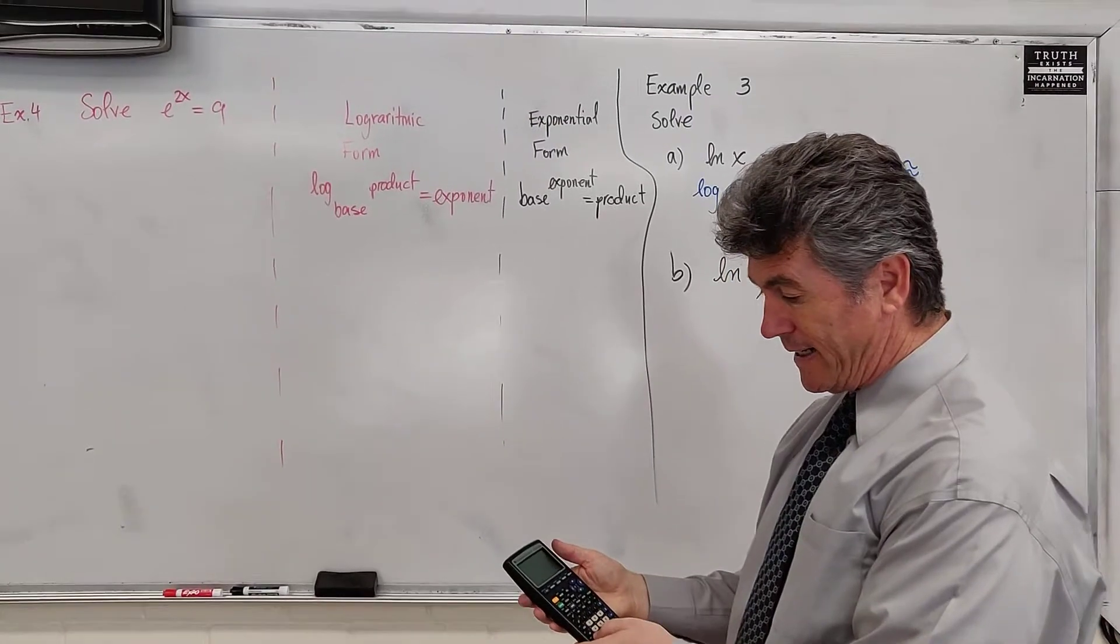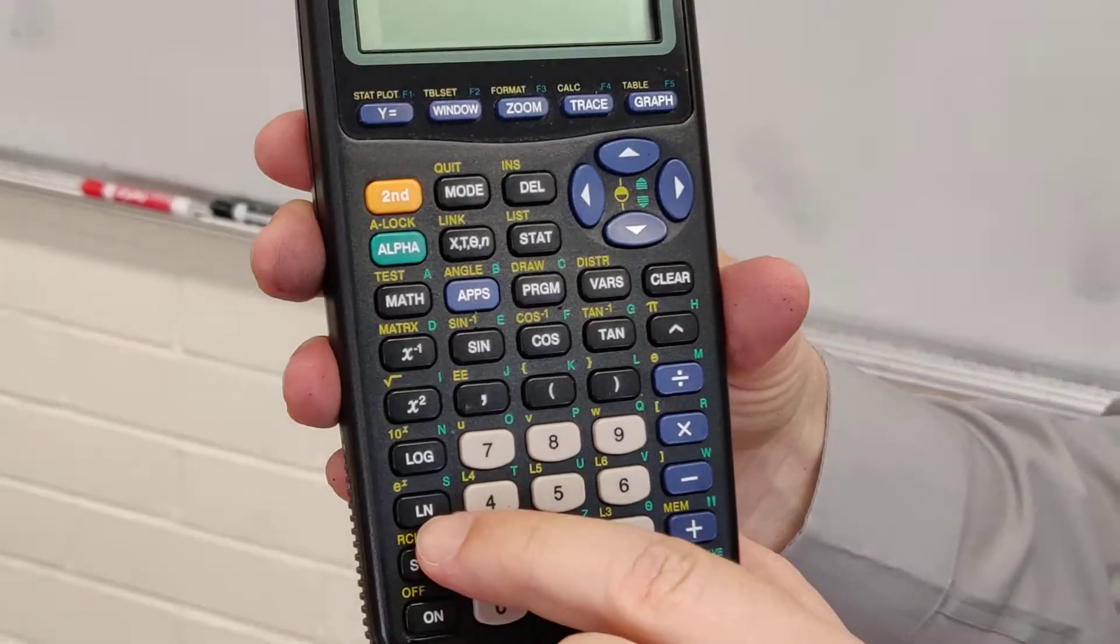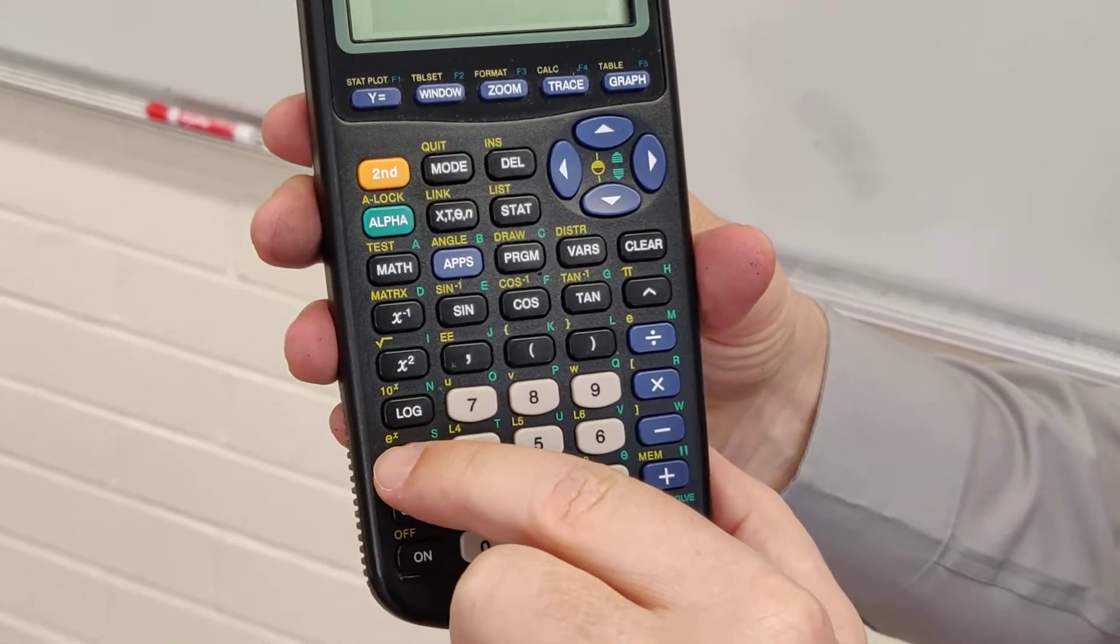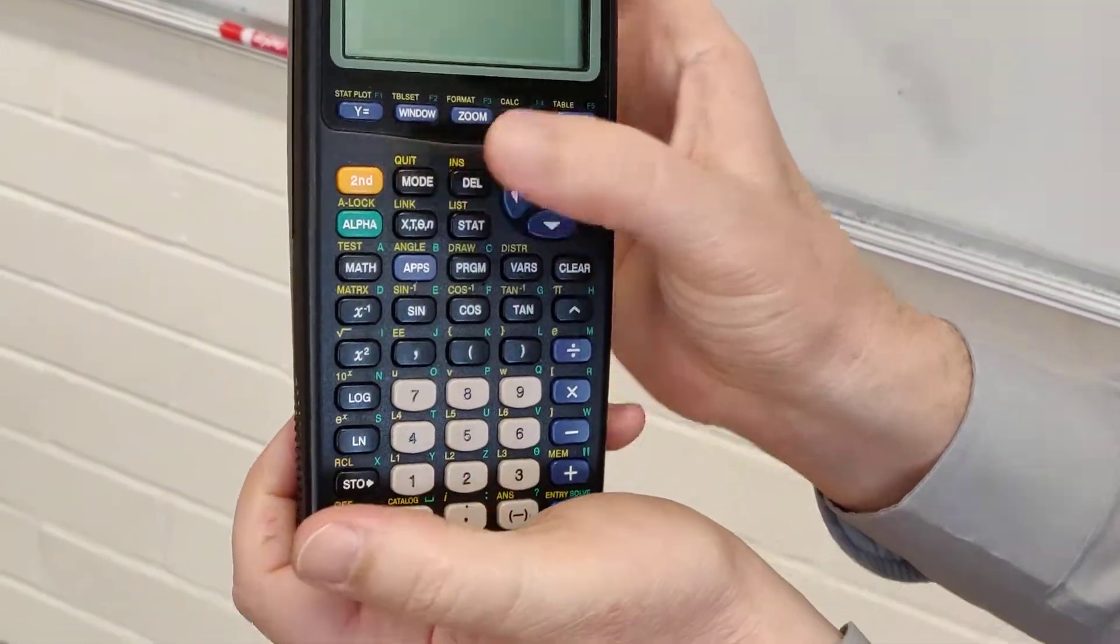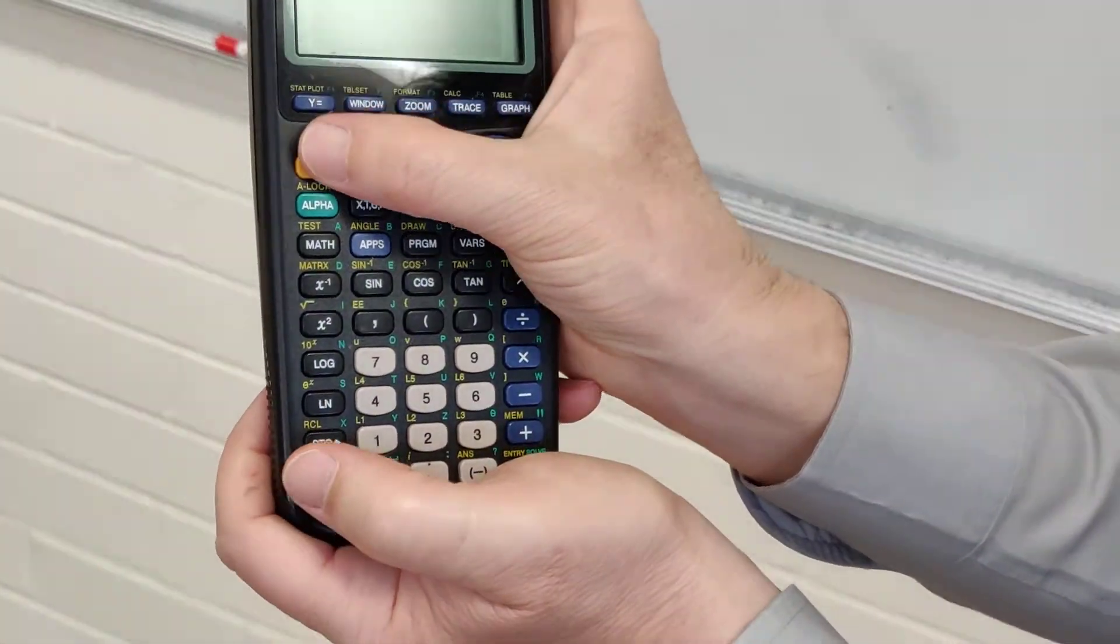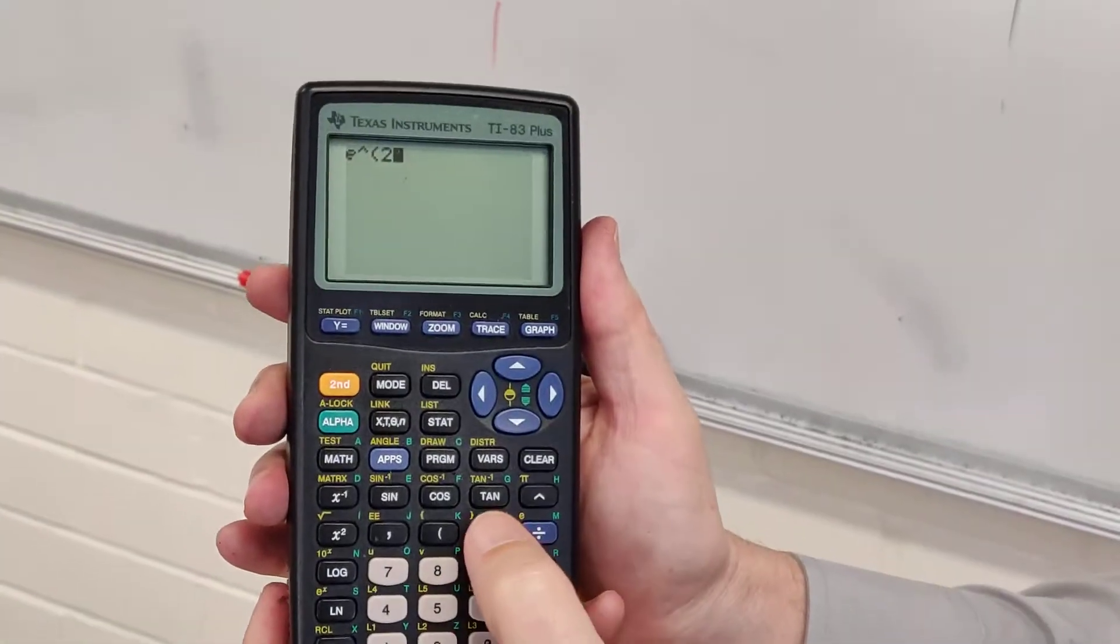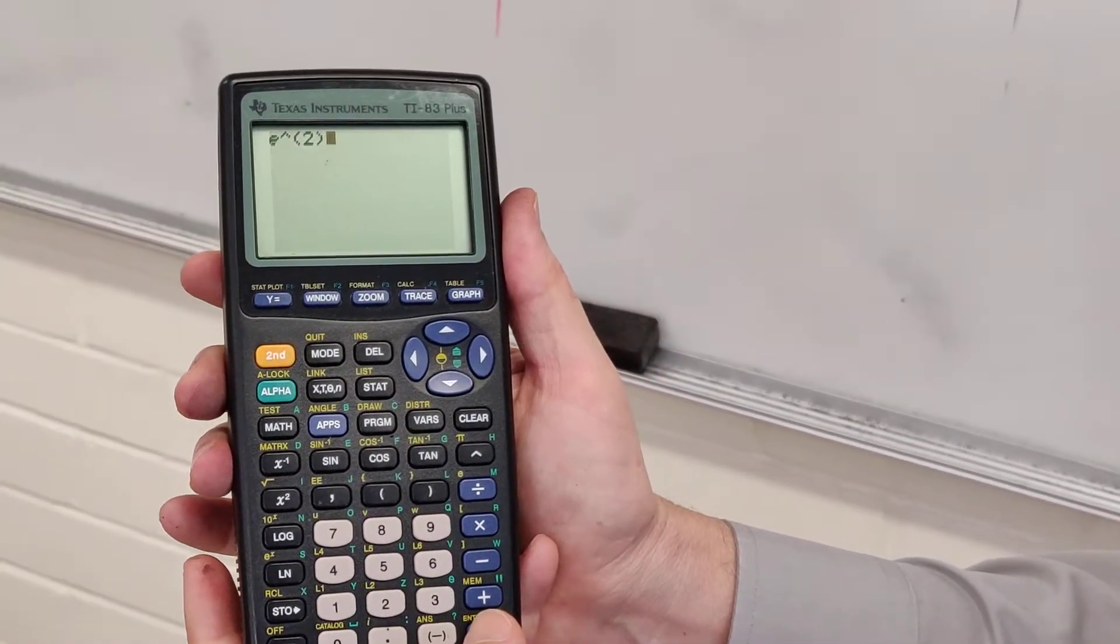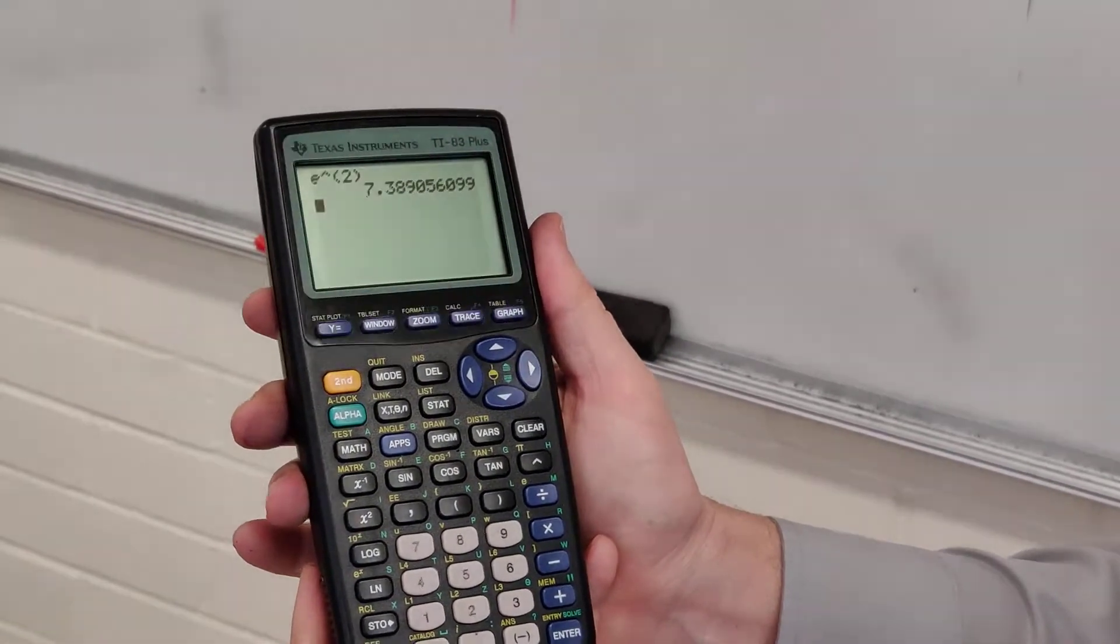If you look at your calculator, and if you look at ln, you will see in yellow above it e to the x. If I want to raise e to the second power, first I press 2, then I press e to the x, and I just enter 2. I will close the parentheses, though that is unnecessary, and I get my answer, 7.389.